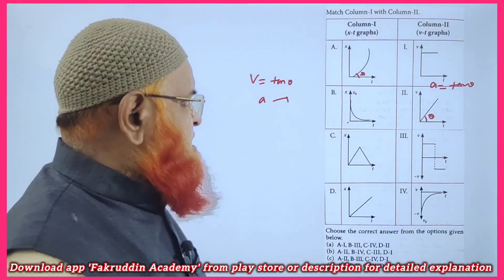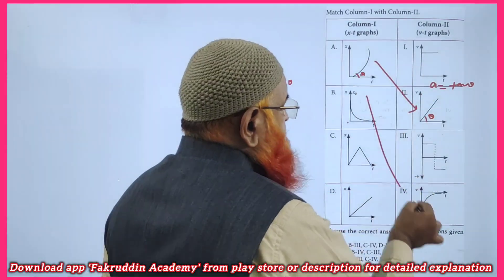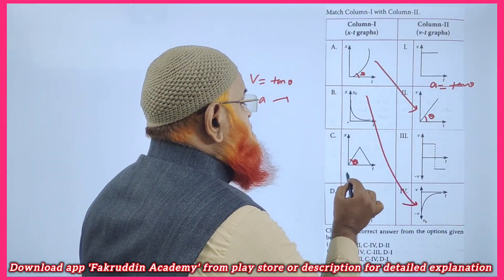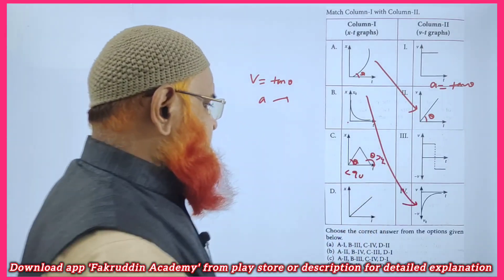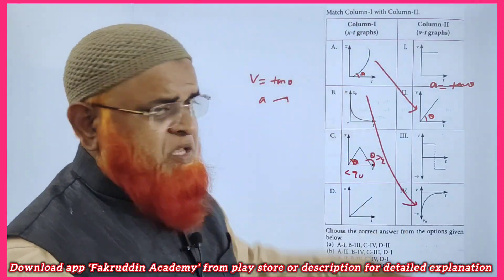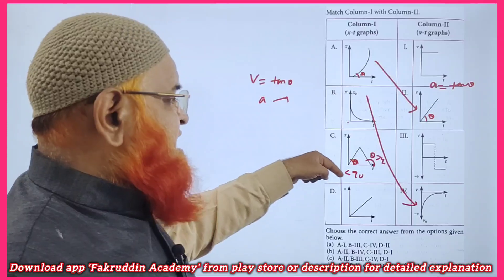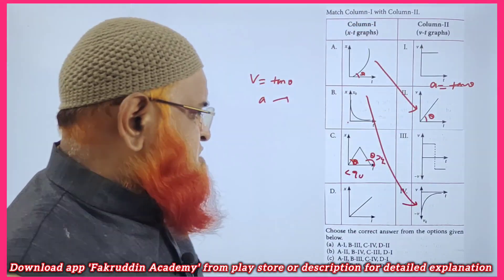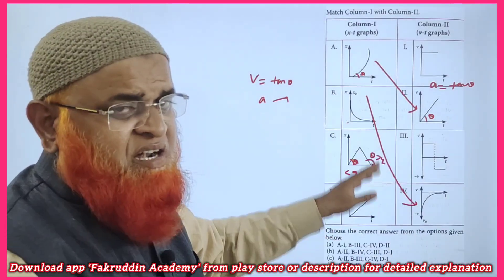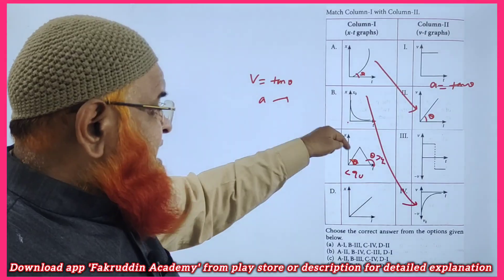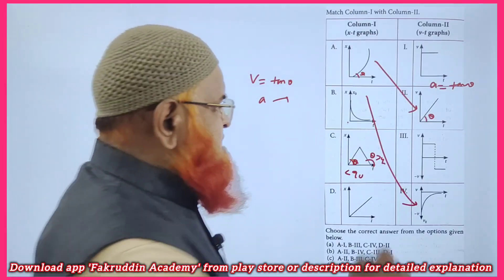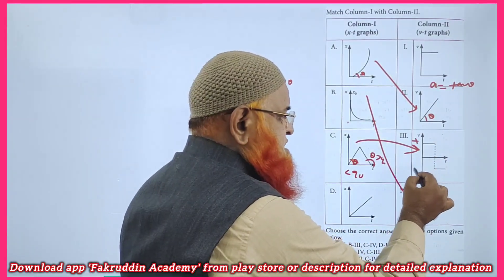So the first option matches with the graph showing negative velocity. The second option matches the decreasing-position graph. In summary: when slope is upward in a position-time graph it represents positive velocity; when the slope is downward it represents negative velocity. In the velocity-time graph, theta is constant but greater than 90°, meaning negative uniform velocity. Theta less than 90° gives positive uniform velocity.